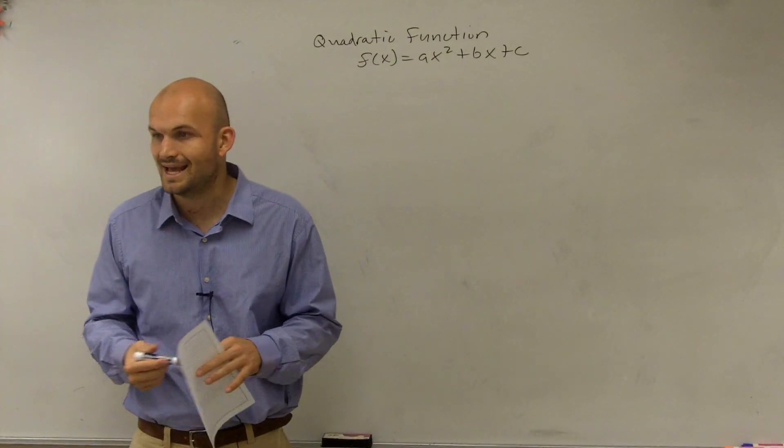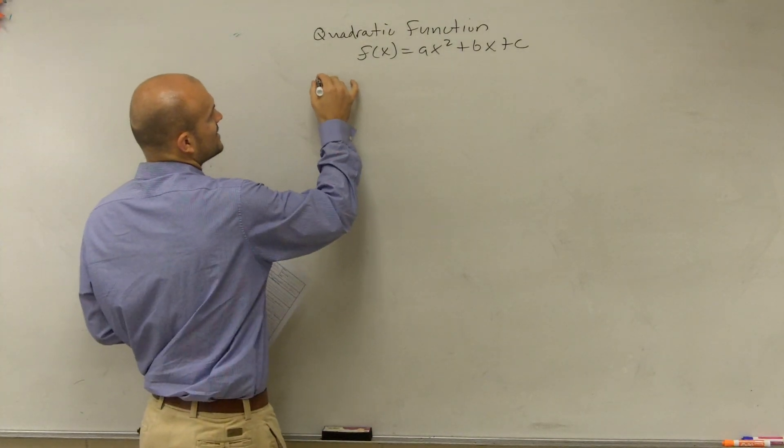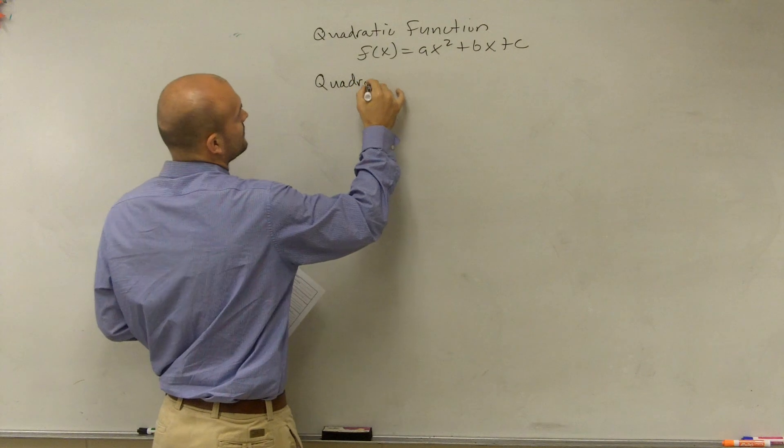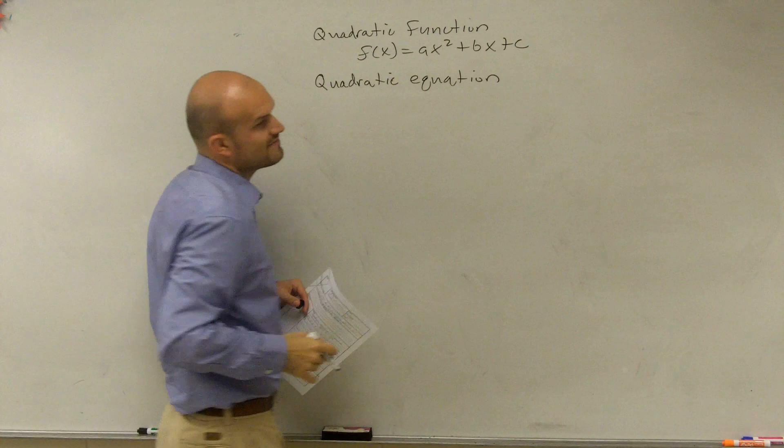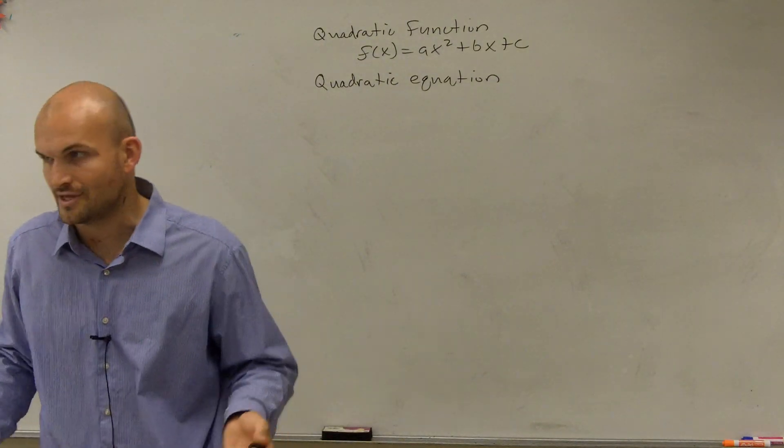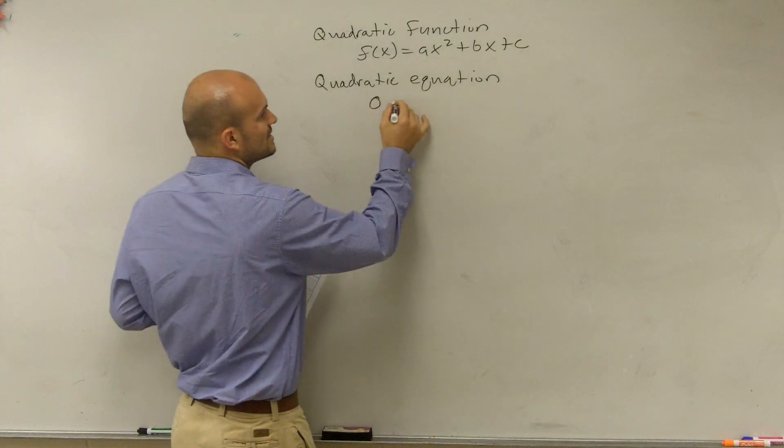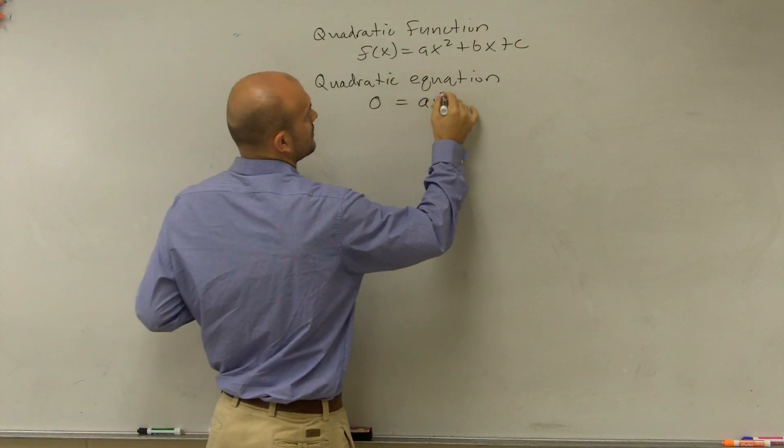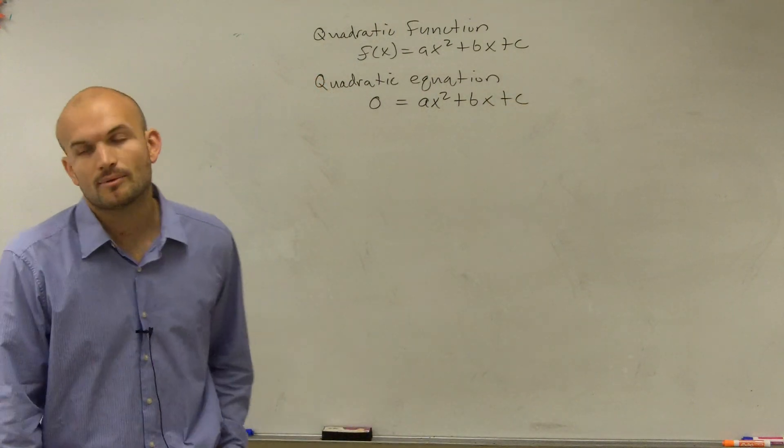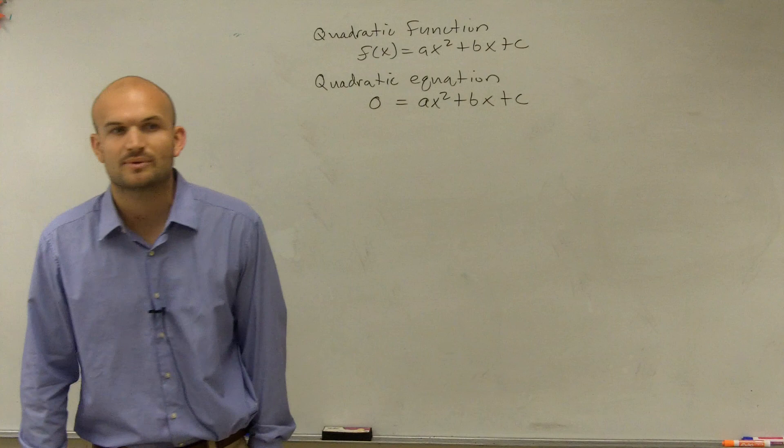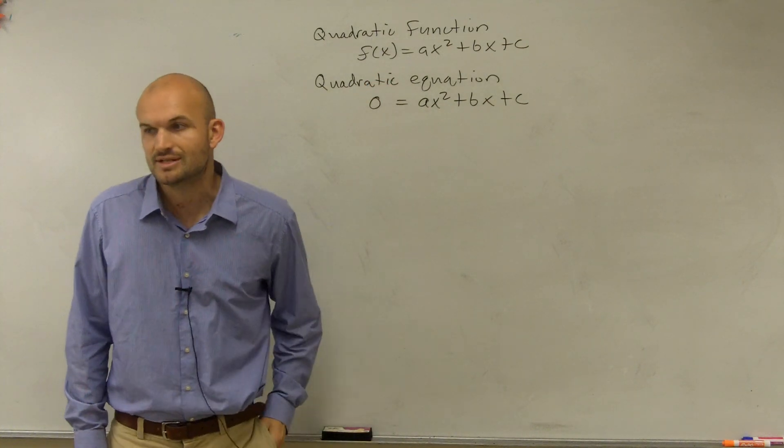So, what we're going to learn today is now really about quadratic equations. So, a quadratic equation is really a quadratic function, but now what we're going to do is we're going to set it equal to a value, and there's going to be a certain value that we're going to want to set our quadratic equations to. And the famous value we're going to set it equal to is zero. So, what we're going to do is we're going to learn how we're going to find, or we're going to take our function, we're going to set it to zero.